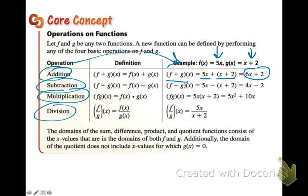The next one says to subtract. So we take the f of x function and subtract what g of x is. We need to subtract all of g of x, so we subtract the 1x to give us 4, and the 2 to give us a negative 2. For multiplying, f of x is multiplied by g of x — distribute and get 5x squared plus x. And finally, we have f of x divided by x plus 2, with no simplifying to do.